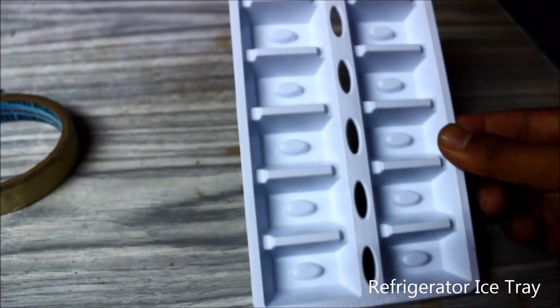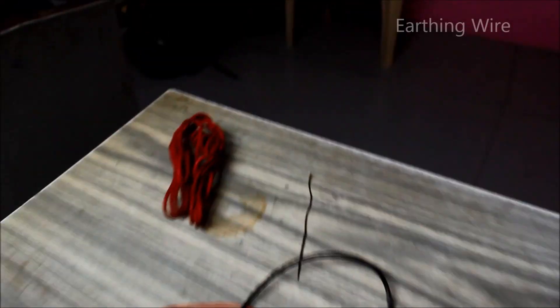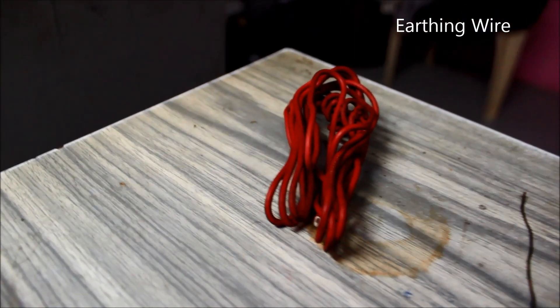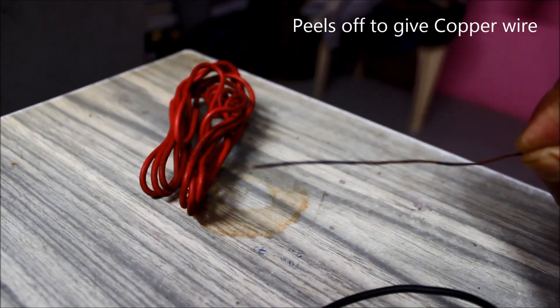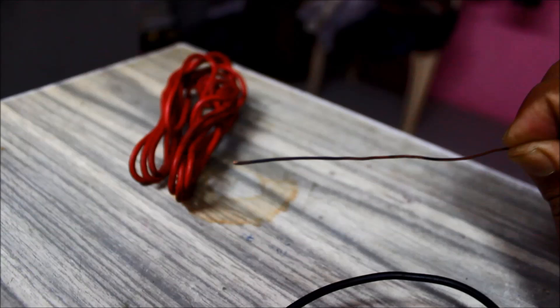An earthing wire as well. If you peel this off it will give you a copper wire which can be used as a metal electrode. So first we'll be bench testing it to see how much voltage is generated.